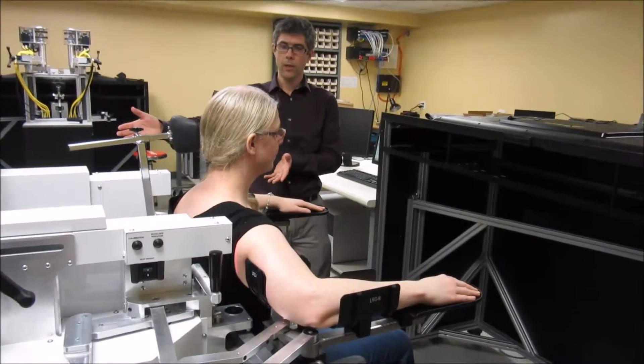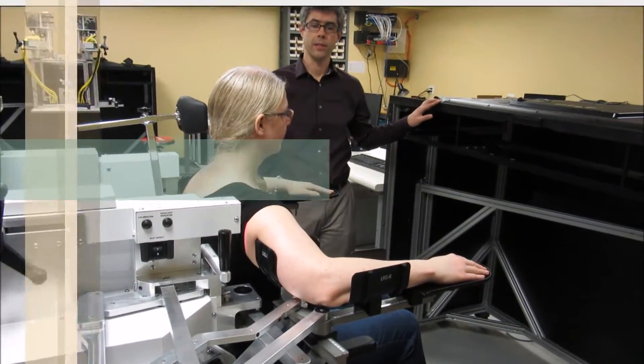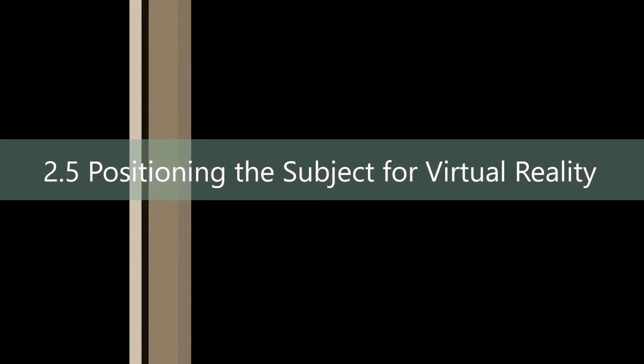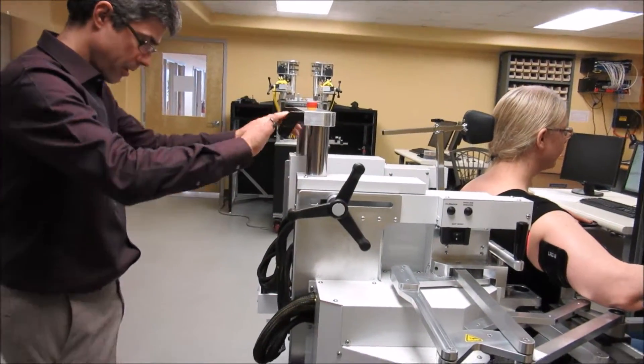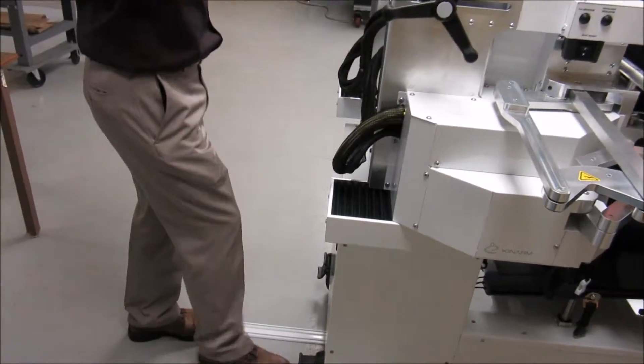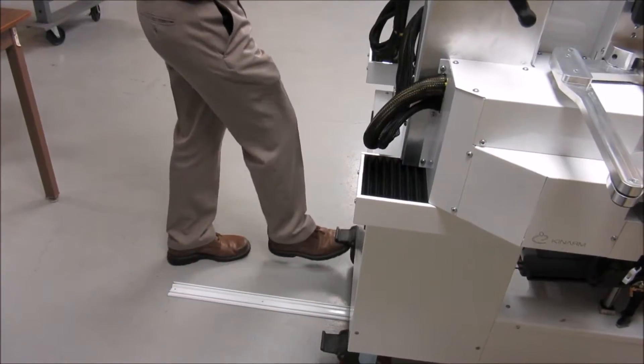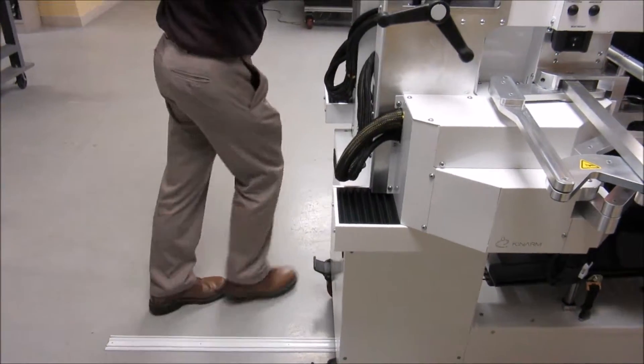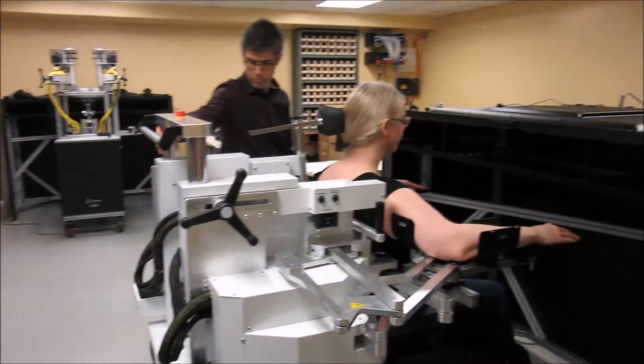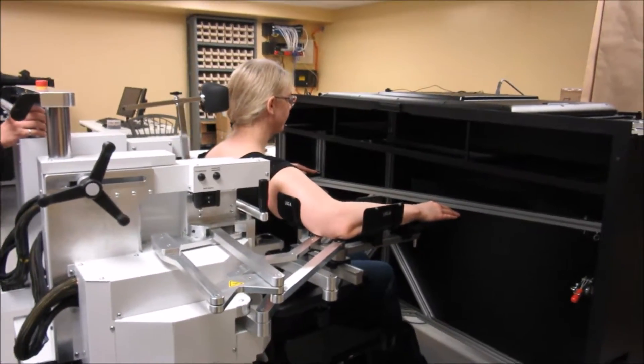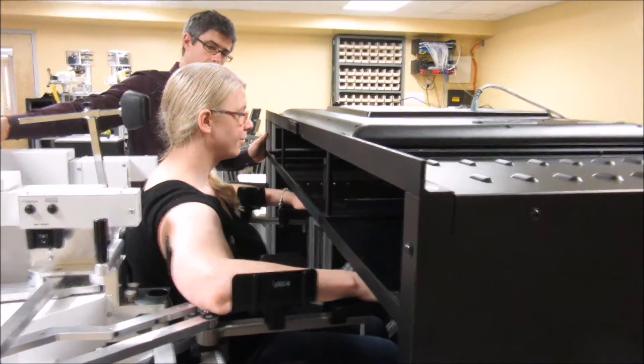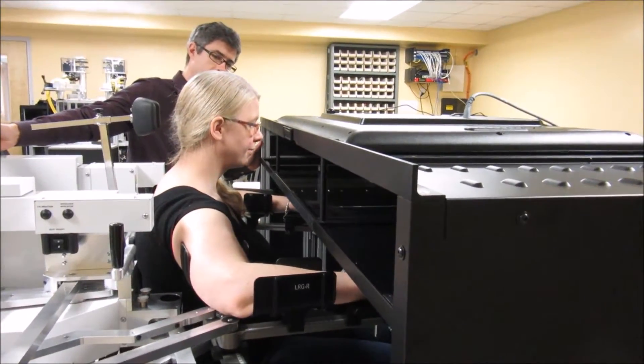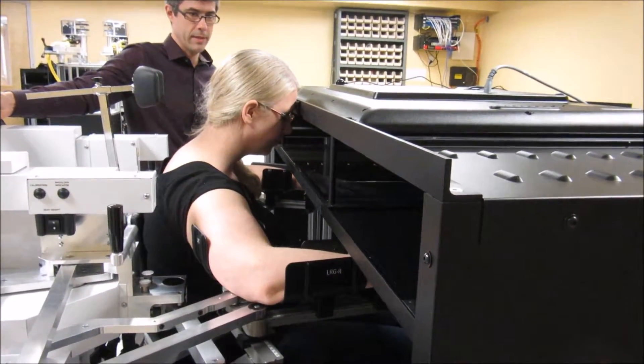And the next step will be to wheel the subject up to the virtual reality station. It is always good to double check that the two clamps have been locked in place. So then you can unlock the caster and slowly wheel them in. If you can tilt your head down so that you are looking towards your hands.